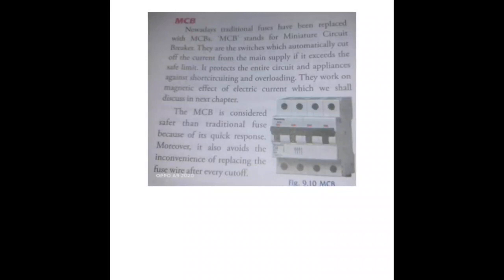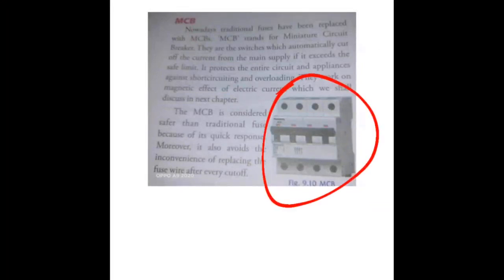Another type of protection device is the MCB — Miniature Circuit Breaker. Its purpose is the same as that of a fuse, but unlike a blown fuse, you do not need to call an electrician to replace it. The MCB works as an automatic cut-off of current from the main supply — whenever excessive current passes in the home circuit it automatically switches off, and when the current stabilizes it returns to its original position. MCB is based on electromagnetism and protects the entire circuit against short circuiting and overloading.